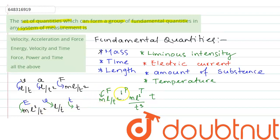So for all the combinations we will get a formation of fundamental quantities. So the fourth option that says all the above is the right option for our question here. Thank you.